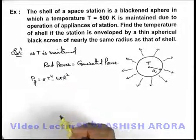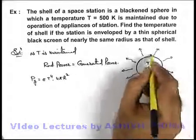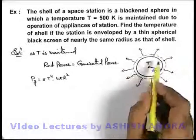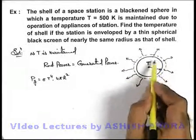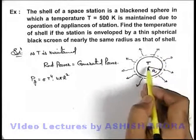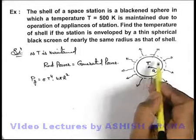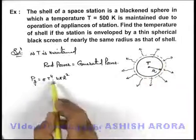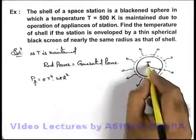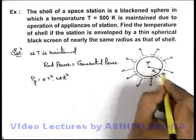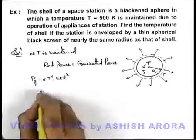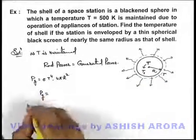Now, if this space station is enveloped by a thin spherical shell, then obviously this shell will receive power from the sphere and radiate to the surrounding. As we know that generated power is the same, so generated power must be equal to sigma T to the power four into four pi r squared. For the shell, the shell temperature should be equal to T, and the space station temperature should change to T₁.